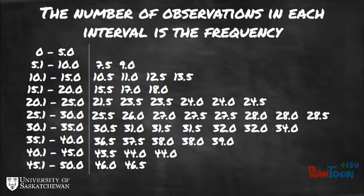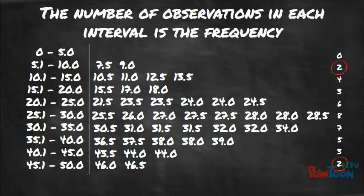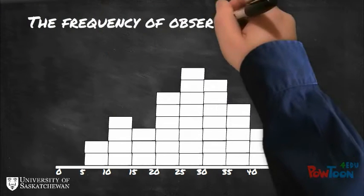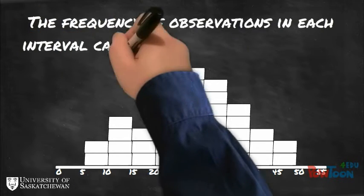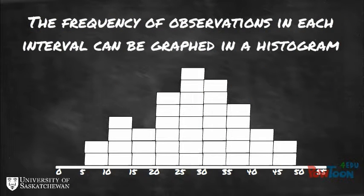We can count up the number of observations in each interval or bin, which is called the frequency. The two intervals at the tails of the frequency distribution each have two observations in them, whereas the 25.1 to 30 cm interval has 8 observations in it. The frequency can be visually portrayed as a histogram, where the number of boxes in each interval is equal to the frequency.